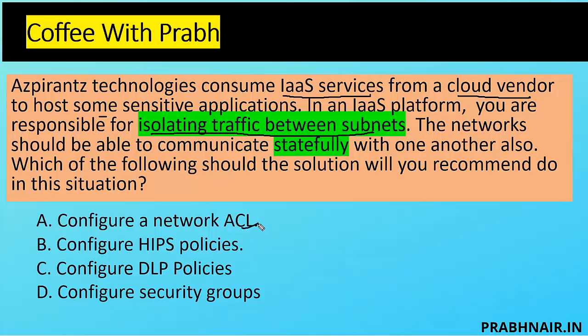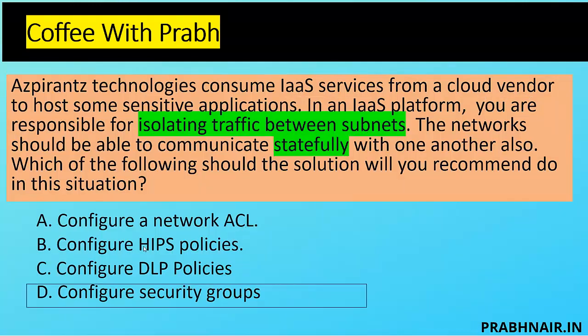ACL could be an answer but ACL is stateless. HIPS is limited to one host, monitoring at the host and application level. DLP prevents data exfiltration but does not provide traffic isolation. So the answer is to configure security groups. Security groups are stateful whereas ACLs are stateless — that's why the answer is D for Delta. Security groups in VMs allow one VM to communicate with others or isolate traffic while maintaining stateful session connections. If the question were about preventing data exfiltration, I would go with C, DLP policy.